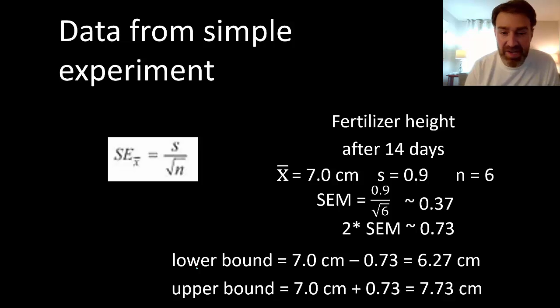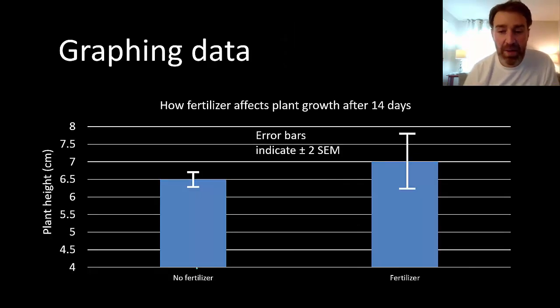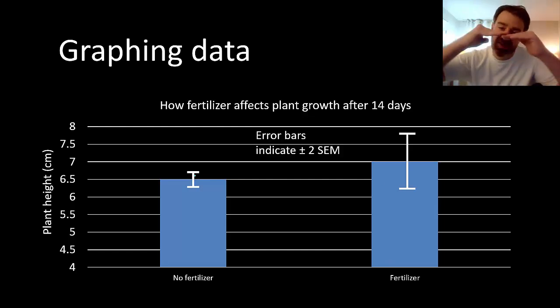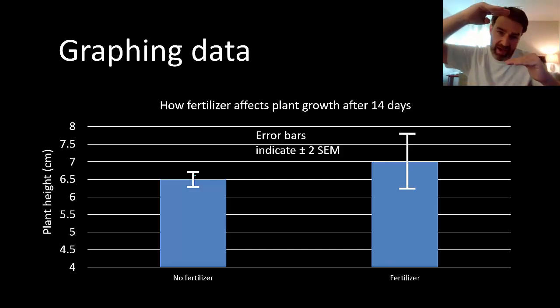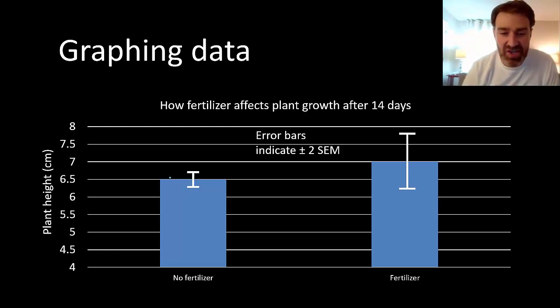What can we do with that information? We can graph it. We're still going to graph our sample means as bars, but what we're going to add is that lower and upper bound calculation. Those are sometimes just called error bars. What that really is reflective of is that our true population mean might fall anywhere within that range. It's usually good to indicate on your graph how many SEMs you calculated. Again, for our course, we're always going to do two for a 95% confidence interval.